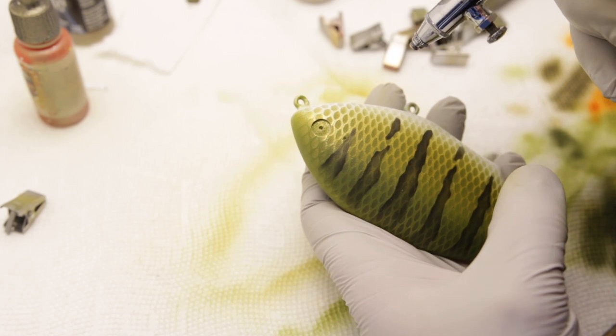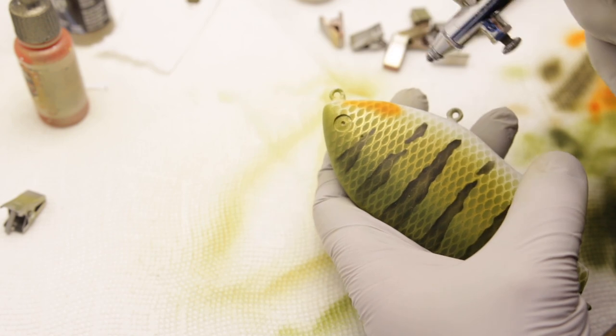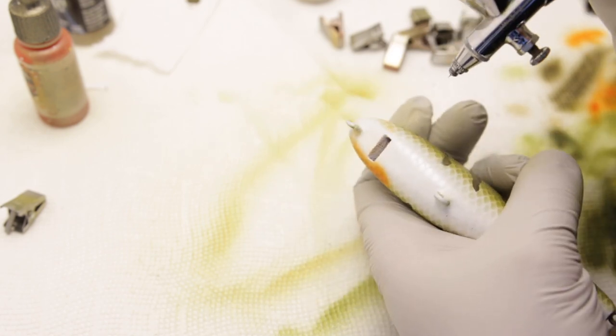When I was looking for inspiration on the internet how a bluegill should look like, a lot of them had this orange blotch behind their gills. So that's what we're painting next.